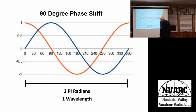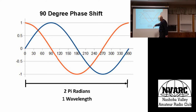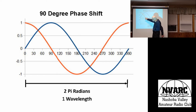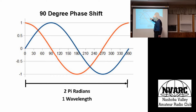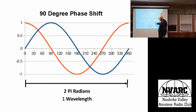To show what we mean by a 90-degree phase shift: one waveform peaks here, and when it gets down to zero, the waveform that's 90 degrees behind it peaks. Then when this one gets to zero, the other is at its most negative, and then back again.